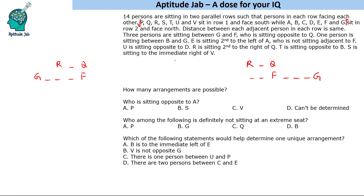One person is sitting between B and G. In the first case, we place one person and then B. In the second case, if we try to place B in a certain spot, the statement says T is sitting opposite to B — that position doesn't work, so B must sit in the valid position. Opposite to B, we place T. If B is placed on the far side, we'd have too many people — positions 3 through 9 — so B on that side is not possible. We automatically place T opposite B.